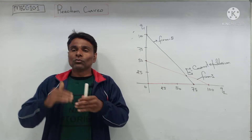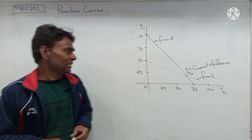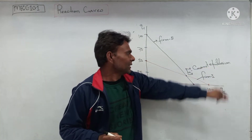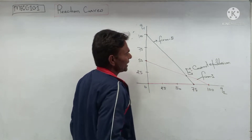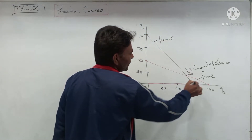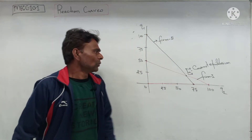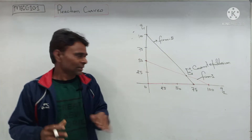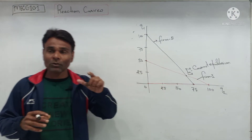The point where the two reaction curves intersect each other is called the Cournot equilibrium. On the graph, the red line indicates firm one's reaction function and the black line indicates firm two's reaction function. The intersection point of the two reaction functions denotes the Cournot equilibrium.